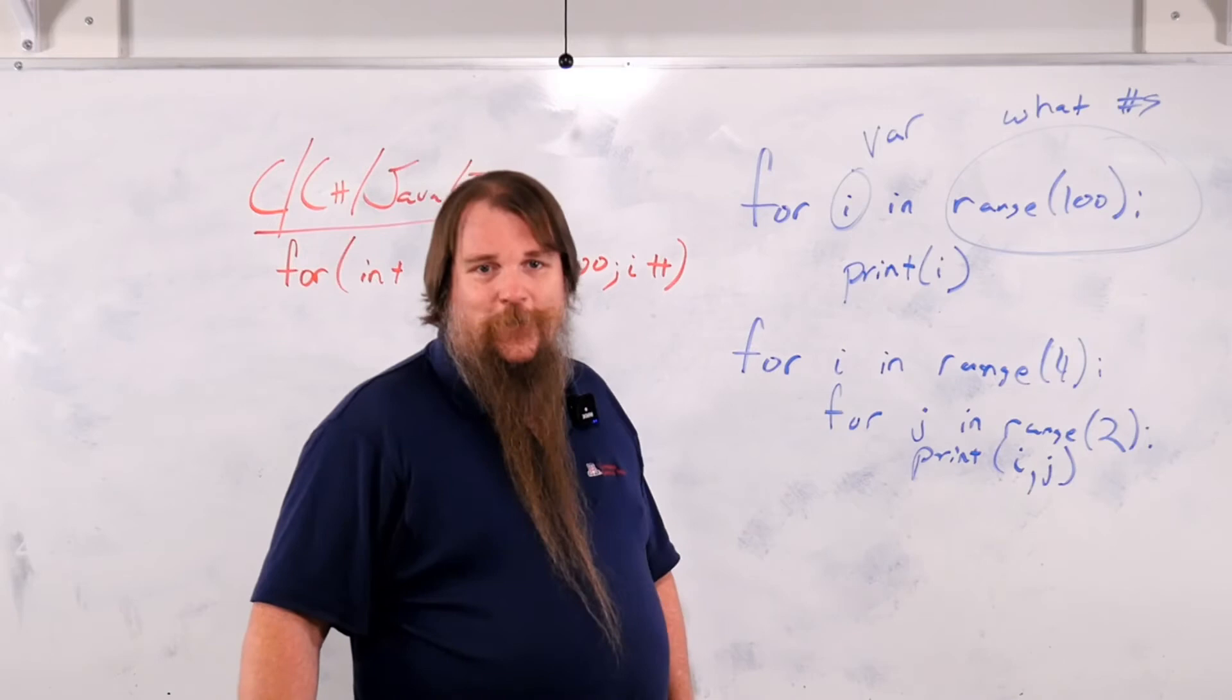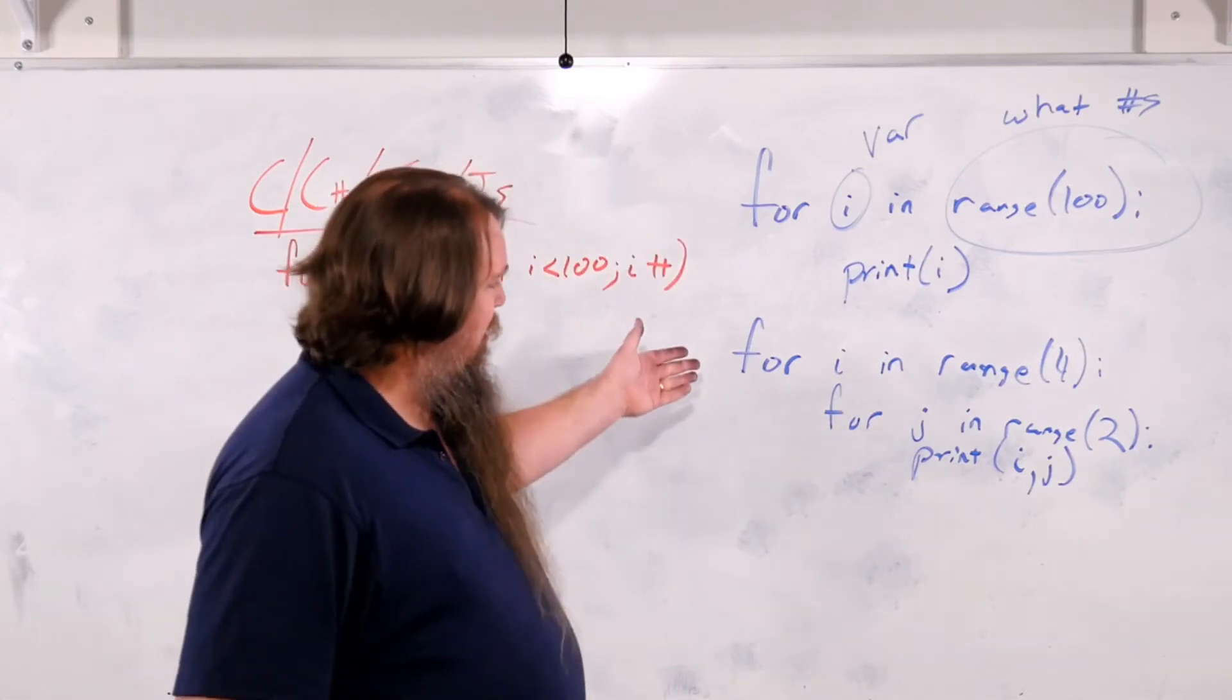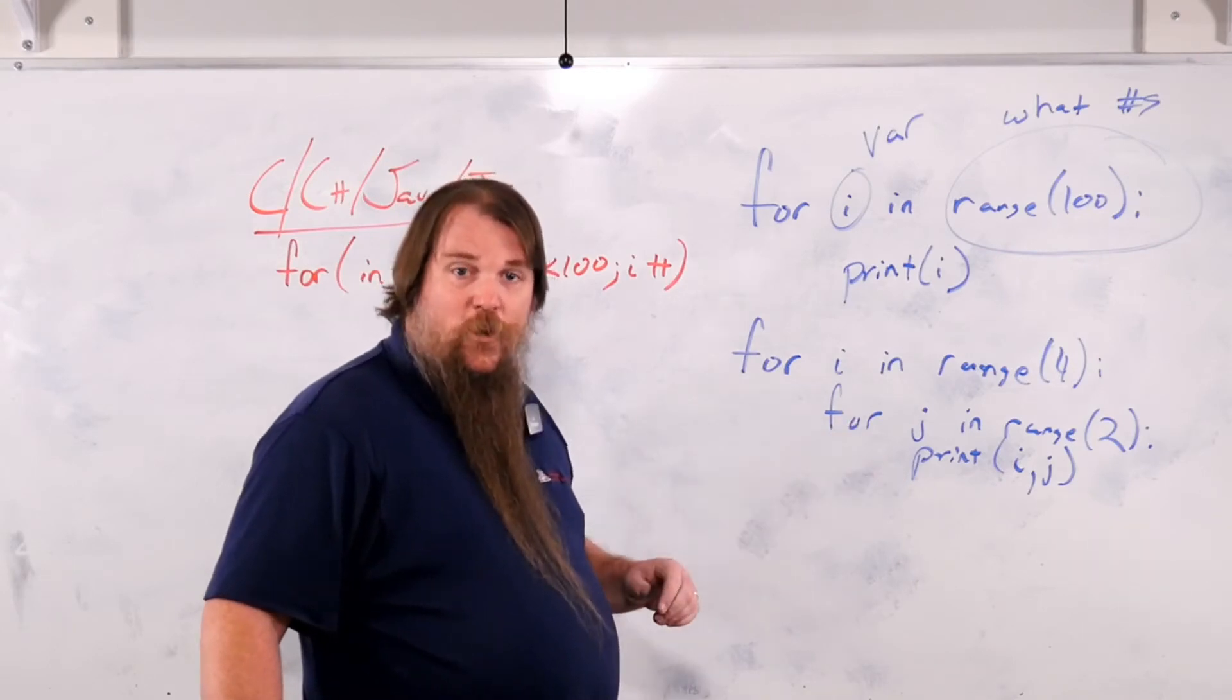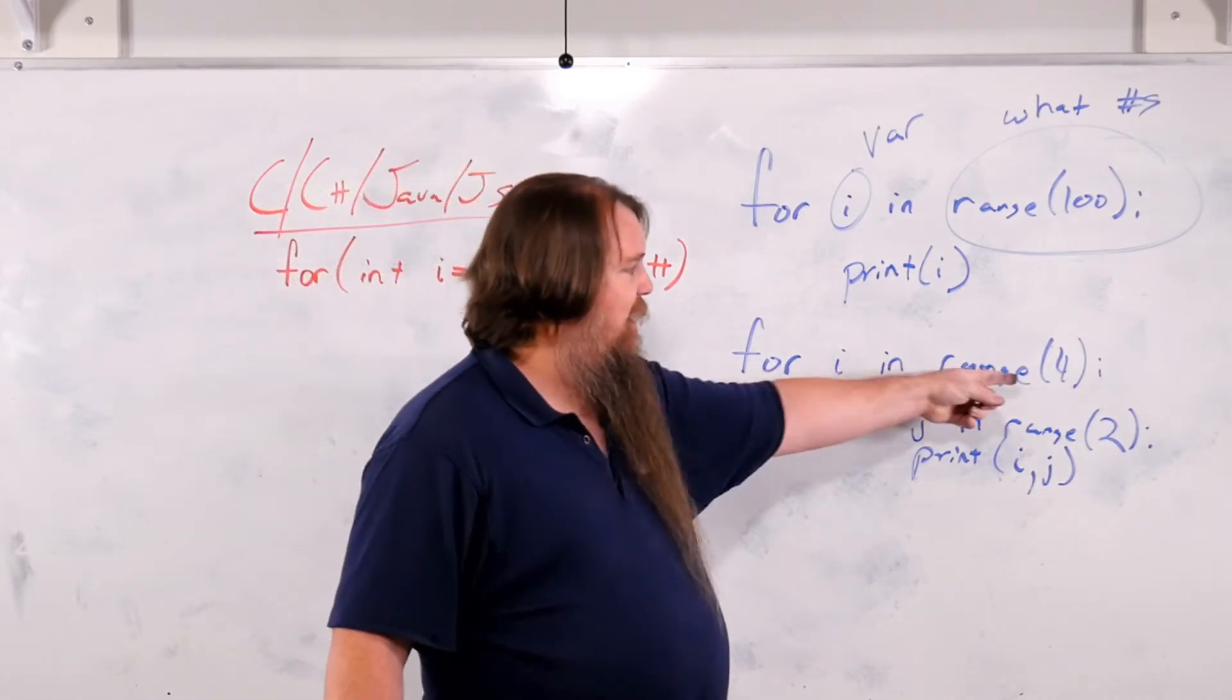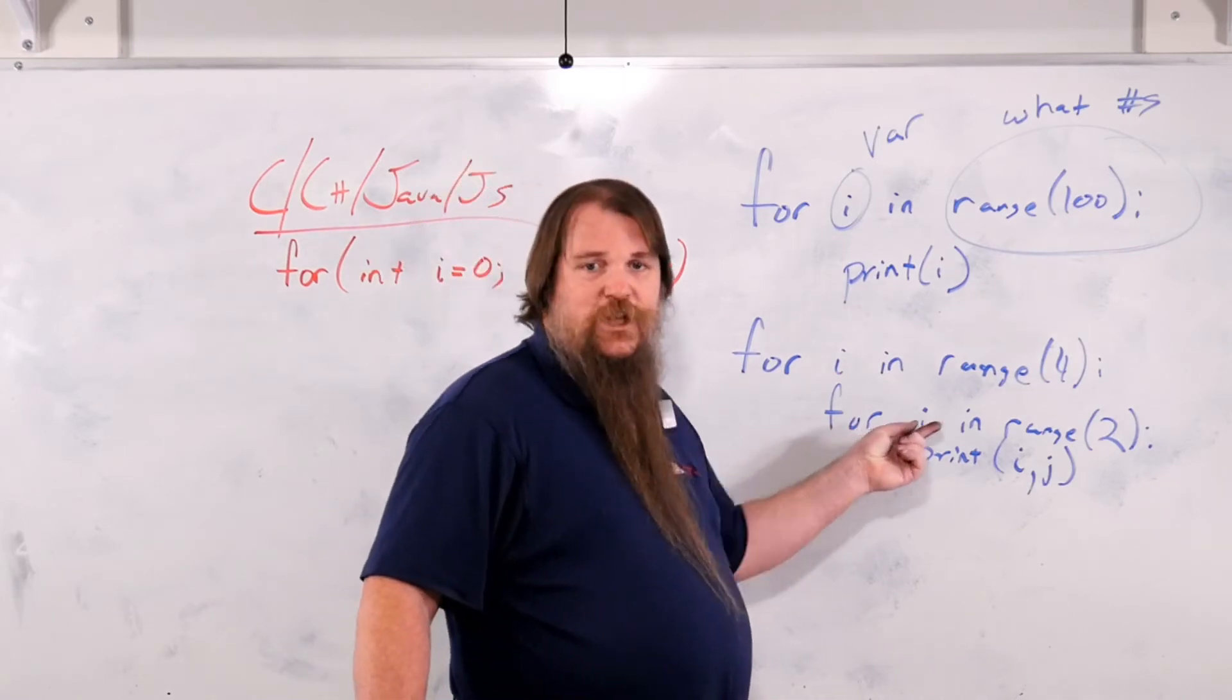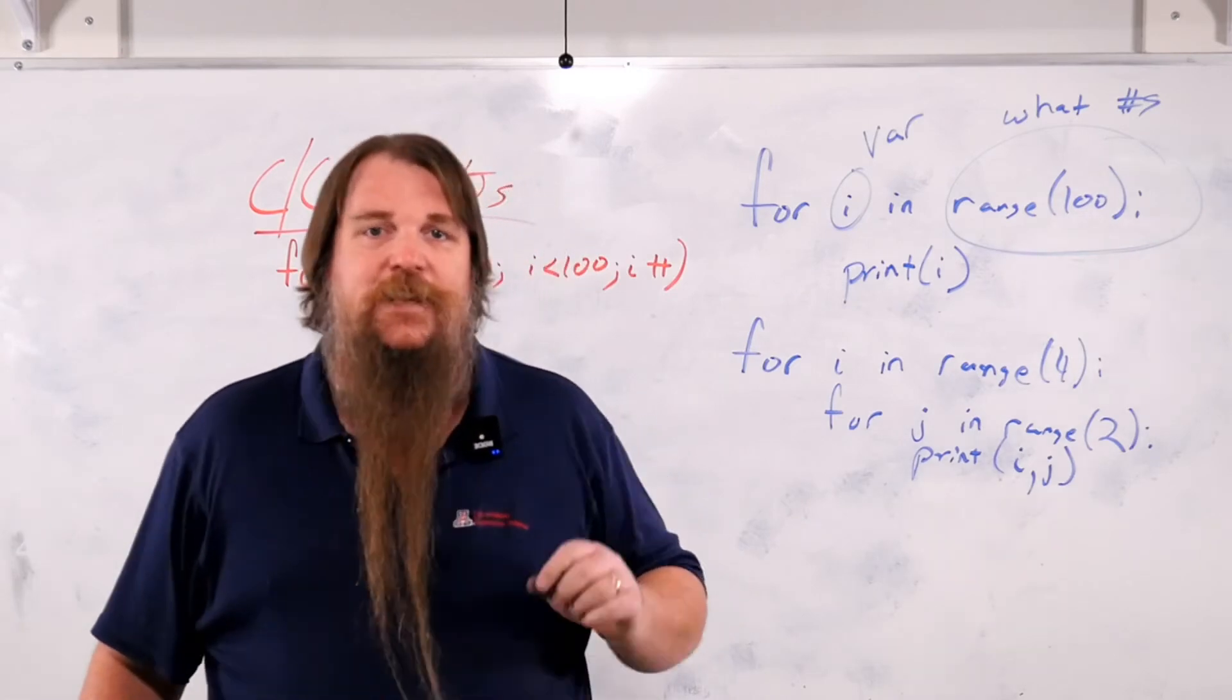Here's my challenge problem for you. I'm not going to show you the answer for this. I'd like you to go either type it up yourself and execute it, or better yet, work it out on paper. You've got a loop here that loops through i, range 4. You've got a loop over here that loops through j, range 2. What values will it print, and in what order?